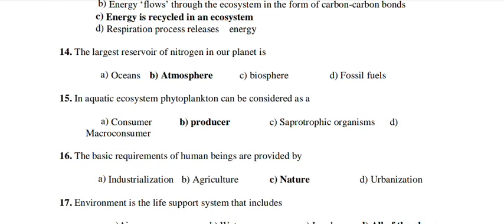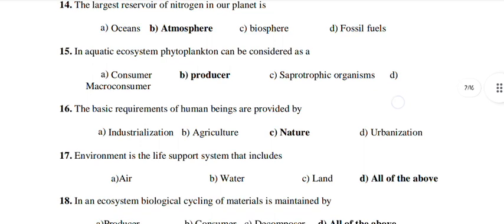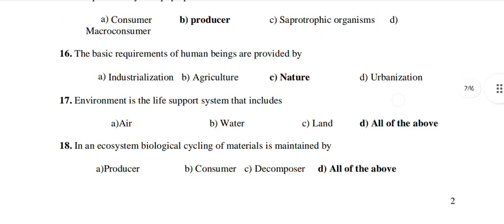In an aquatic ecosystem, phytoplankton can be considered as a producer. The basic requirements of human beings are provided by nature. So the basic requirement is nature — after which we get agriculture, urbanization and industrialization. We need nature first. So environment is a life support system that includes all the above — we need air, water, land, everything.